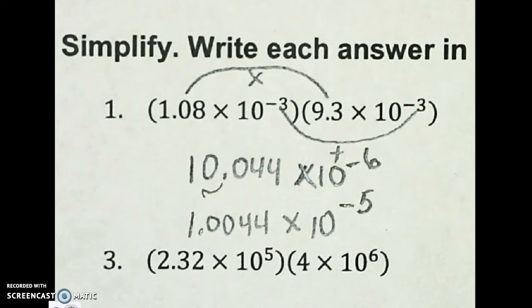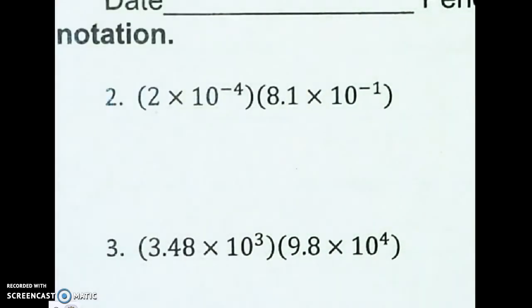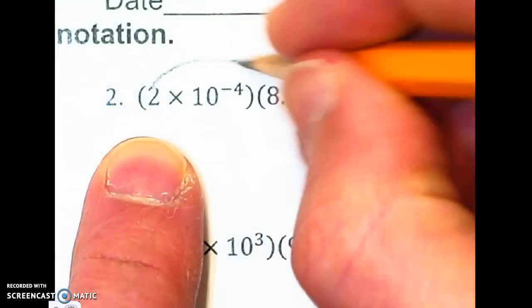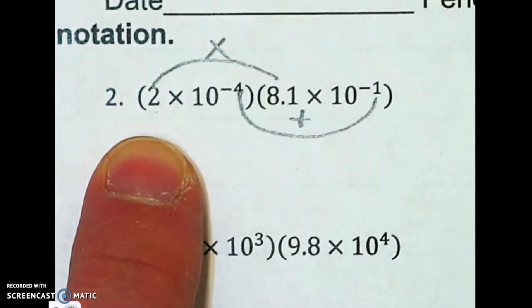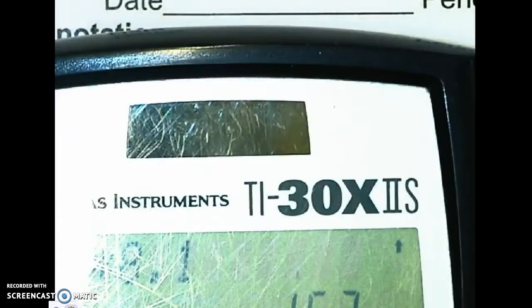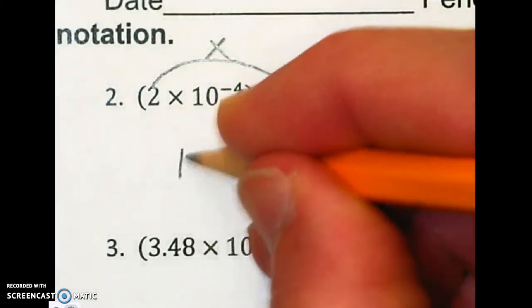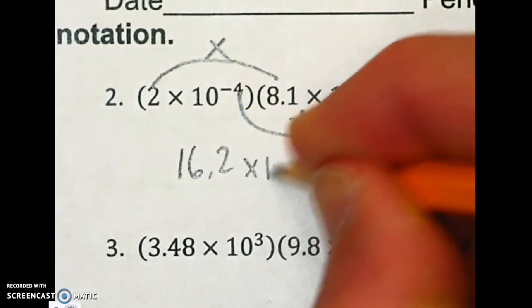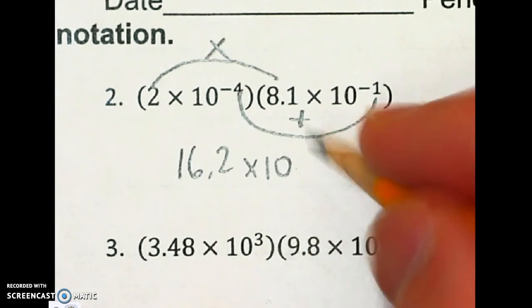I'm going to do one more of those. So we're going to take a look at this second one here. What I'm going to do is multiply these numbers and add these exponents. So 2 times 8.1 gives 16.2 times 10. And I need to figure out what my power is. Negative 4 plus negative 1 gets me negative 5.